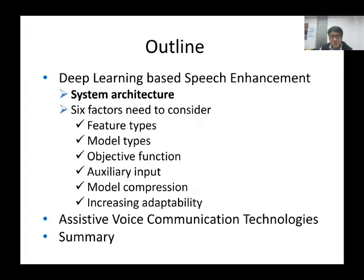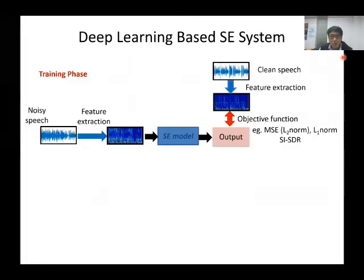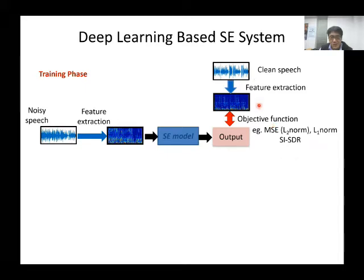I will introduce the system architecture of deep learning-based speech enhancement. This is a regression task and has two phases. In the training phase, we prepare paired noisy and clean speech data. Both noisy and clean speech data are first converted to spectral features by applying short-time Fourier transform. The speech enhancement model transforms the noisy spectral features and generates the output. Then we compare the difference of the outputs and clean spectral features.